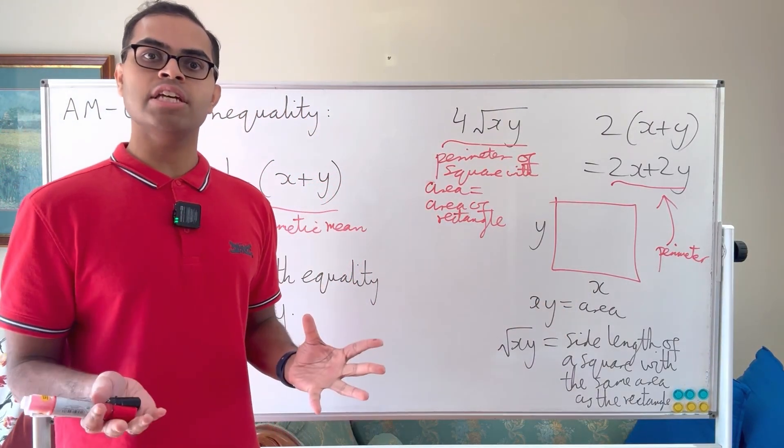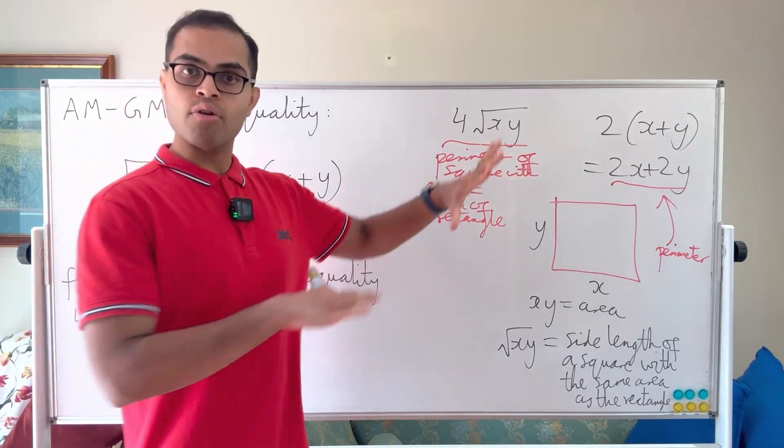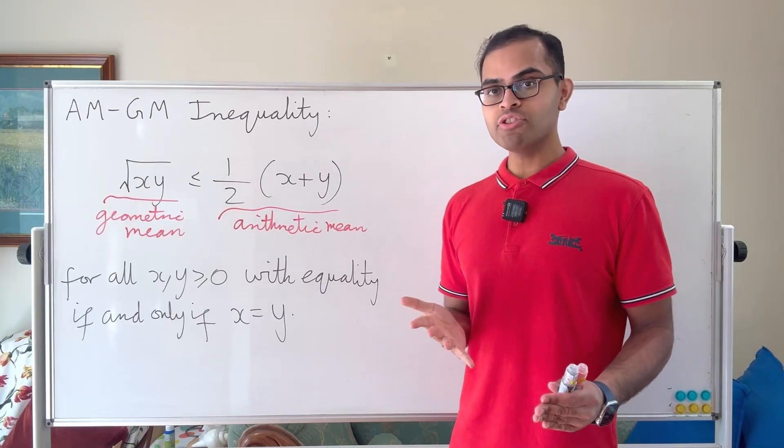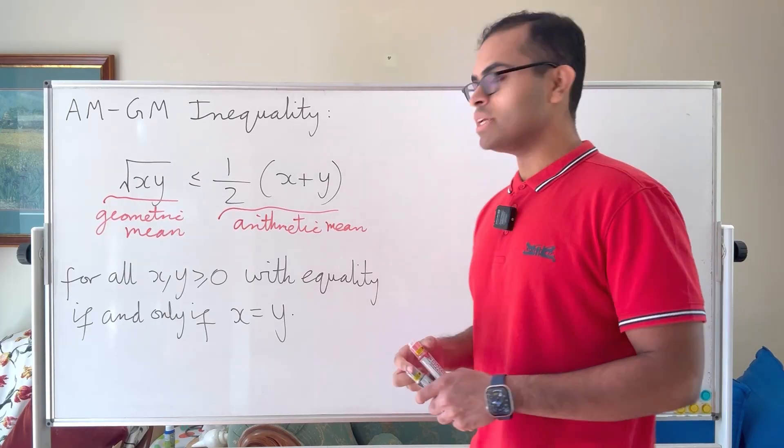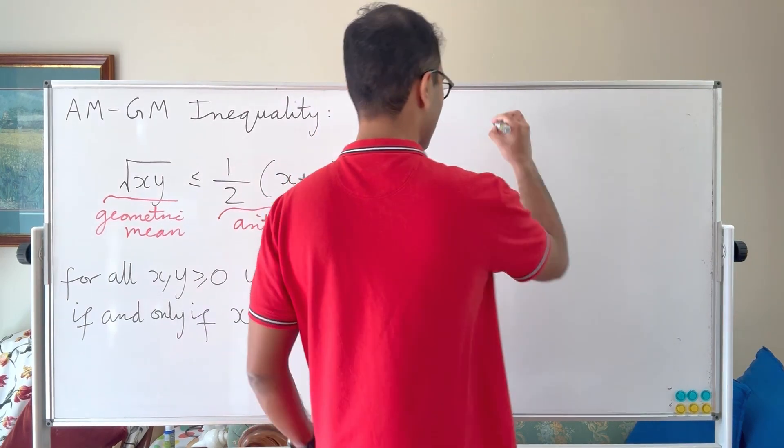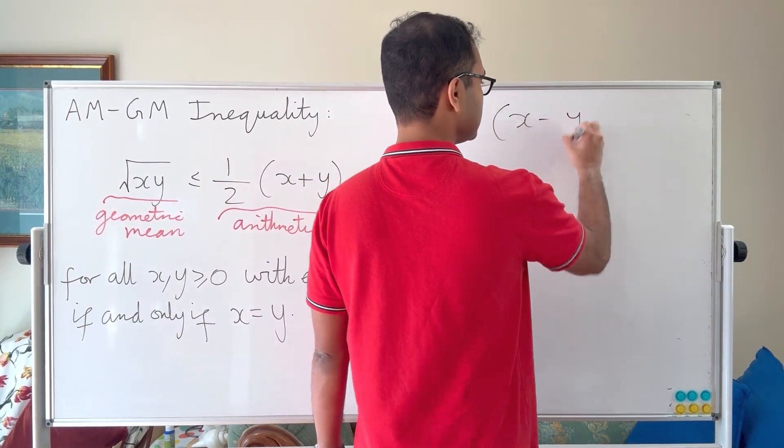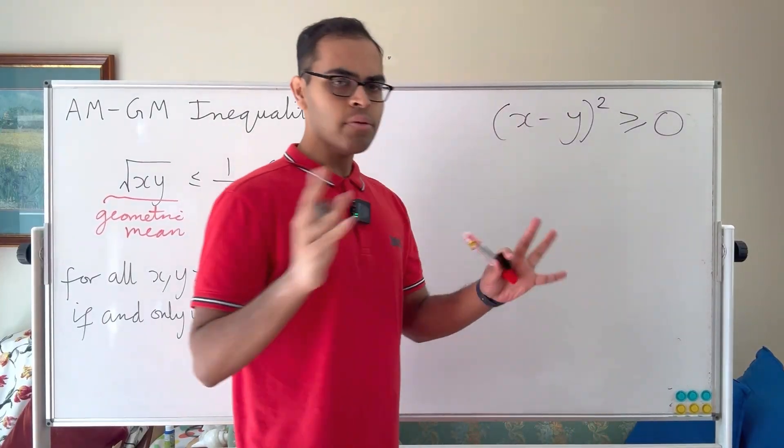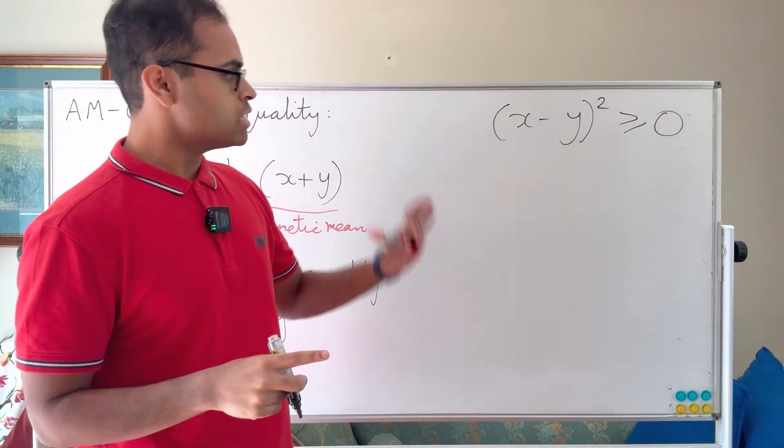It's an optimization problem. Let's prove it now. Now that we've got the geometric intuition, let's get into the proof. Now we've got our geometric interpretation, let's prove the AM-GM inequality. This is a rigorous mathematical proof. We're going to start with the inequality x minus y squared is at least zero.